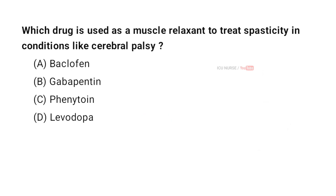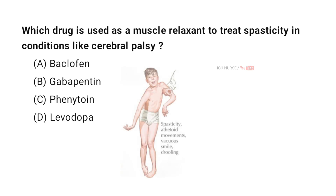Which drug is used as a muscle relaxant to treat spasticity in conditions like cerebral palsy? A. Baclofen, B. Gabapentin, C. Phenytoin, D. Levodopa. And the correct answer is A. Baclofen.